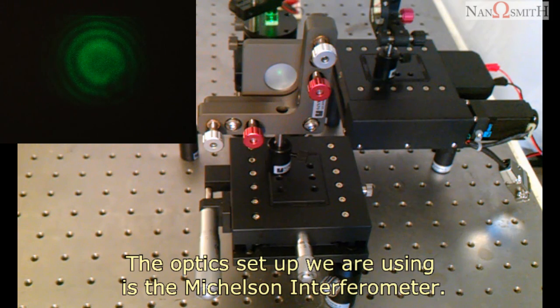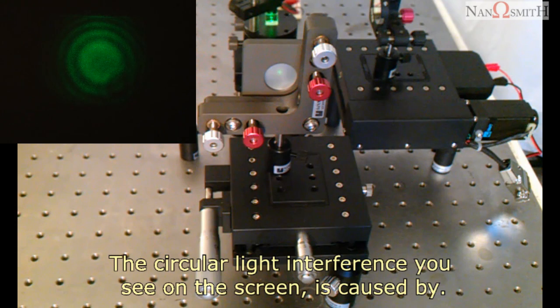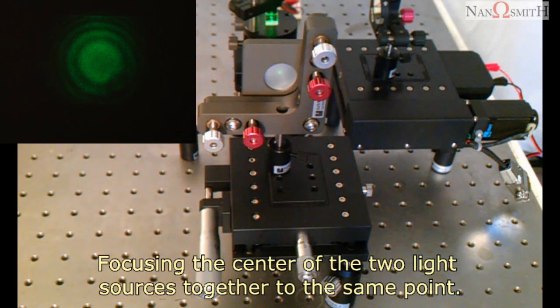The optic setup we are using is the Michelson interferometer. The circular light interference you see on the screen is caused by focusing the center of the two light sources together to the same point.